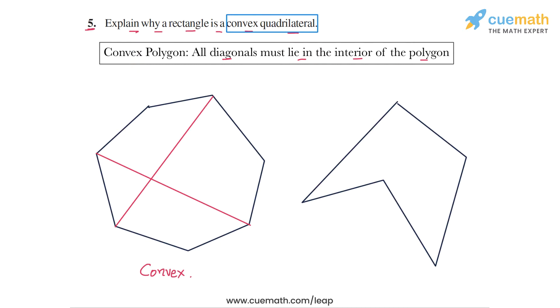But if you look at the polygon on the right and if you join this vertex to this vertex here, then you can see that this diagonal lies outside the polygon. And this is happening because the angle at this vertex is a reflex angle, and hence this diagonal lies outside the polygon. So this is an example of a non-convex polygon, which we sometimes also refer to as a concave polygon.